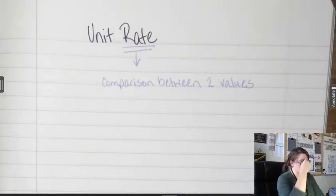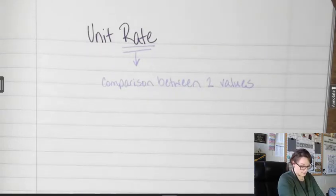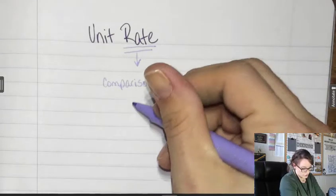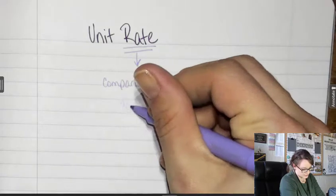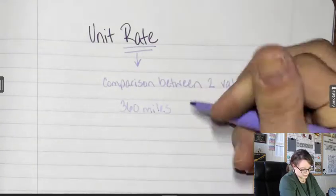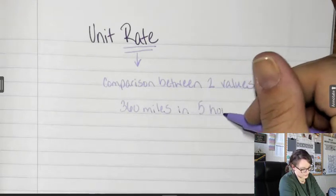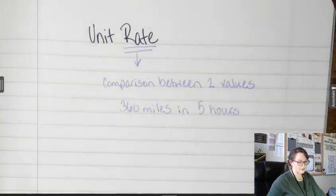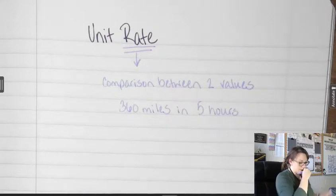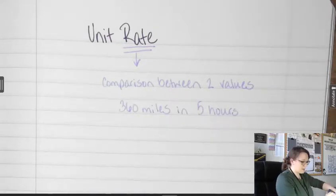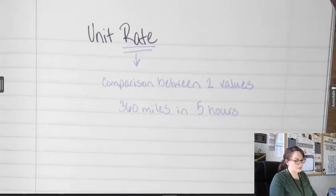Since I went to Amarillo this weekend, this was my rate. We drove about 360 miles in around five hours. And that's one way, we turned around and did it again on Sunday. So we drove 360 miles in five hours. This is a rate.